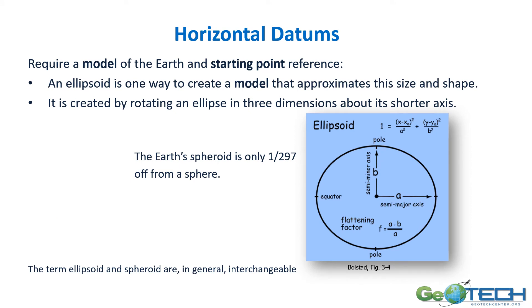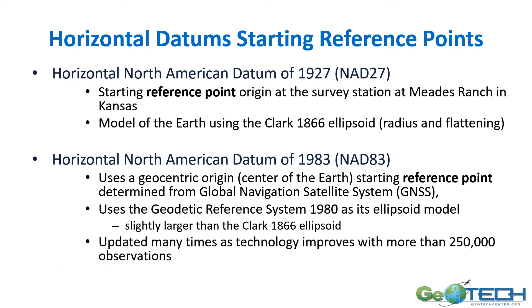For horizontal datums, we use a model created by taking an ellipsoid and rotating it around its short axis to create a spheroid. While we think of the earth as not a perfect sphere, it's pretty close — only 1/297th off of a perfect sphere. Horizontal datums have a starting reference point, and we're going to look at the two for NAD 27 and NAD 83.